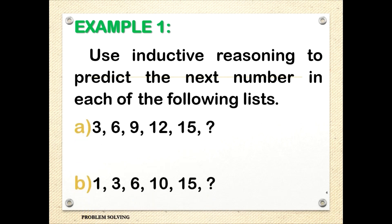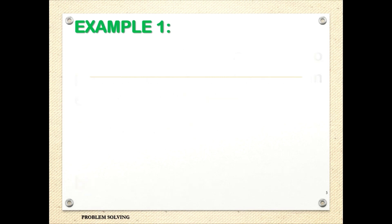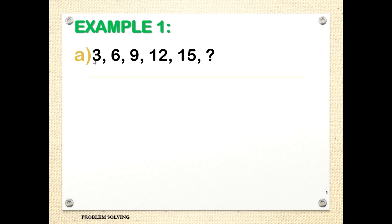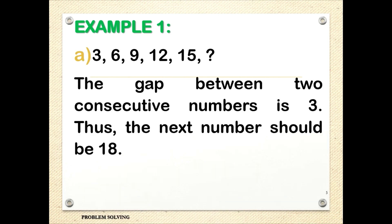For letter A, we have this sequence — what must be the next number? If you notice, for each two consecutive numbers, their difference is 3, or their gap is 3. Thus, the next number should be 18. We have differences of 3, 3, 3, 3, 3 — so 15 plus 3 is 18.